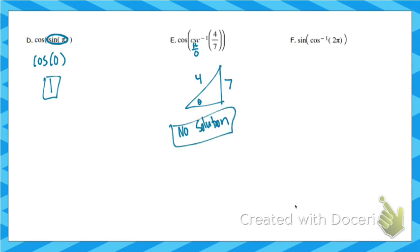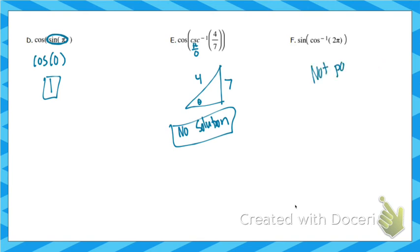Last one: cosine inverse of 2pi. This is why it's important to understand what these questions are asking. Cosine inverse means at what angle will the x-coordinate be 2pi. We never have an x-coordinate of 2pi. If you try to draw a triangle, adjacent over hypotenuse would be 2pi, but 2pi is bigger than 1 — that doesn't work. This is not possible; you cannot do cosine inverse of 2pi.